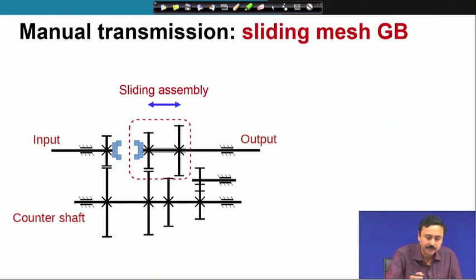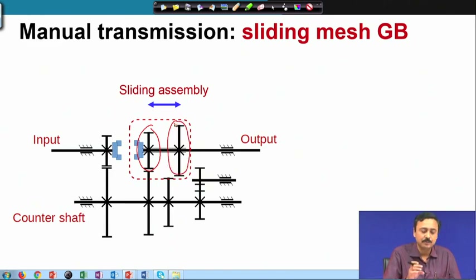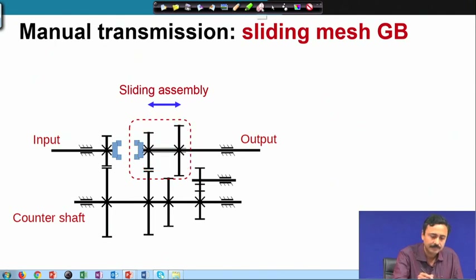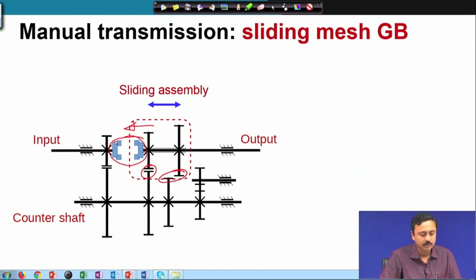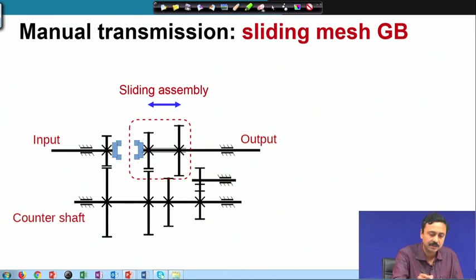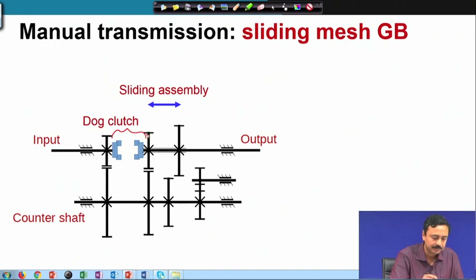This part is marked out. As you can see, these two gears cannot rotate with respect to the shaft, but they can slide. If you slide in this direction, you can have meshing between these two gears, or if you slide it further, these two components come in contact. These are called the dog clutch.